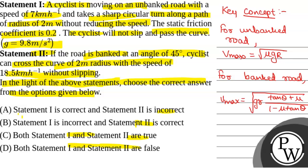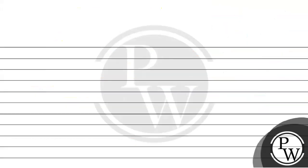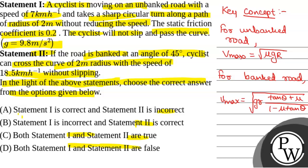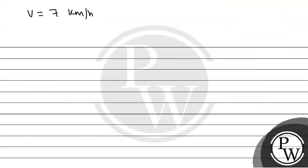Now, in the first statement, we have unbanked road and speed is 7 km per hour. So we have been given v equals 7 km per hour. And we will find the maximum safe speed. So Vmax equals the square root of mu g r.